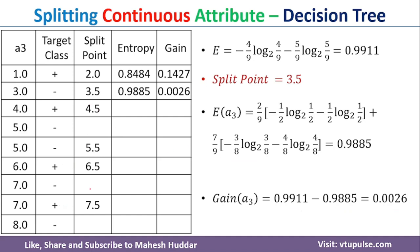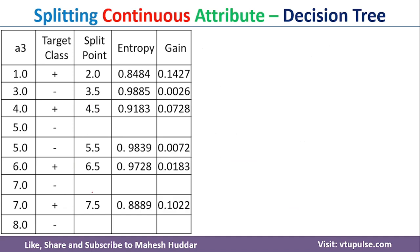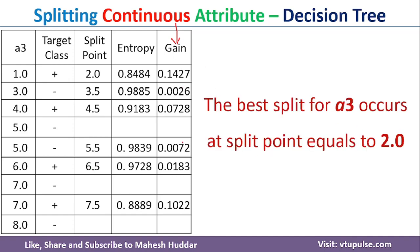Similarly, we need to find the entropy and gain for the other split points. I have already calculated those and they are listed here. Now we look at the gain column: the best split point occurs for A3 at 2.0 because the information gain for 2.0 is the maximum compared to all other split points. So in this video, I have discussed how to find the split points, how to find the entropy and information gain for those split points, and finally how to select the best split point.